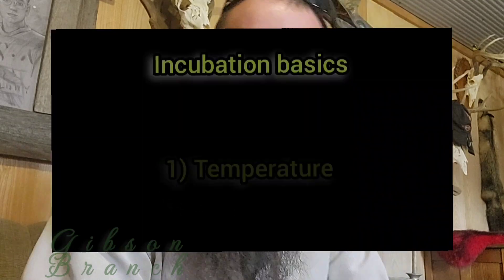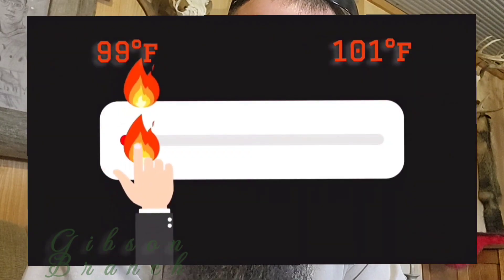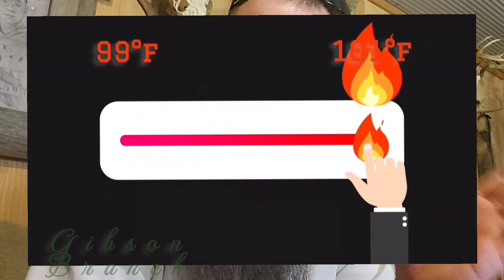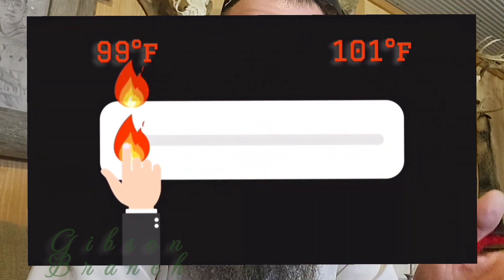The first condition requisite for successful incubation is temperature. The temperature for the 21-day incubation period has to remain between 99 and 101 degrees Fahrenheit, or for those who haven't been exposed to freedom, 37.22 and 38.33 degrees Celsius.